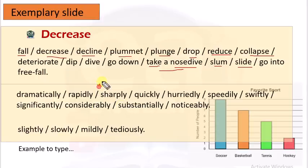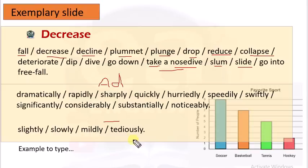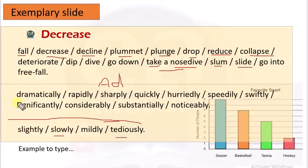Jab koi cheez kam ho rahi ho toh woh niche ja rahi hoti hai — uski bhi adverb hoti hai — kis tarah se niche ja rahi hai: dramatically, rapidly, sharply, quickly, hurriedly, speedily, mildly — aram se ja rahi hai — thodi si tediously, slowly — yani jab passively ja rahi ho; considerably ja rahi ho, significantly — toh phir upar wale adverbs hain.